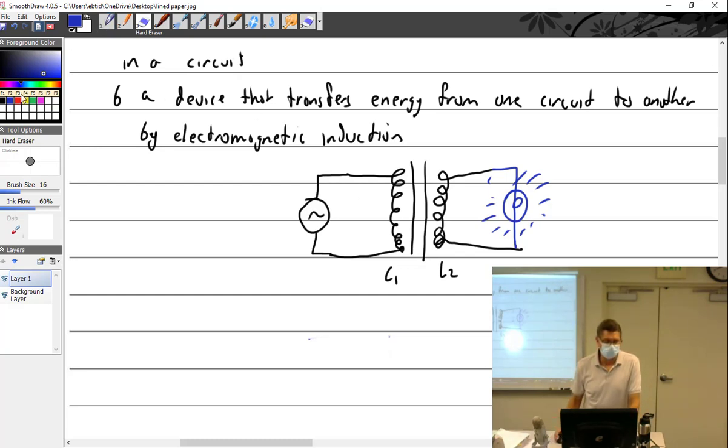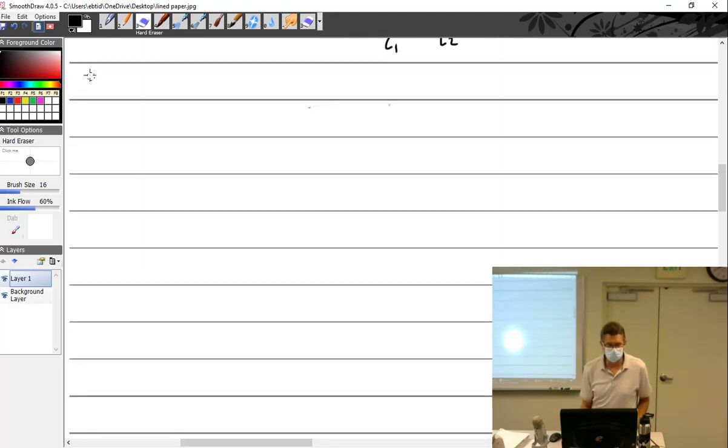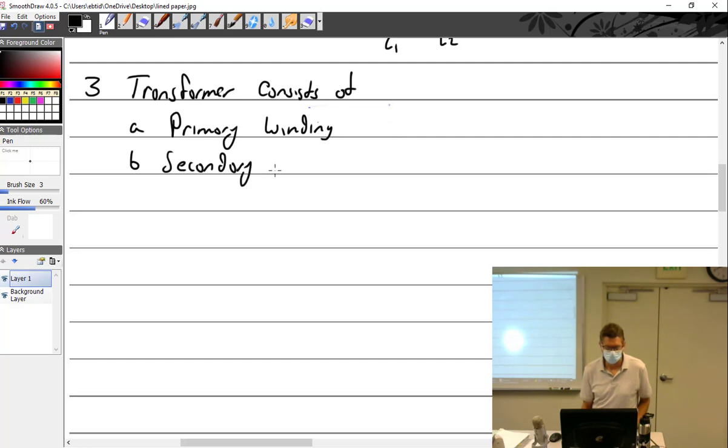A transformer consists of a primary winding, a secondary winding, and a core. The core is usually made of soft iron. It's never just one piece - they're laminated.